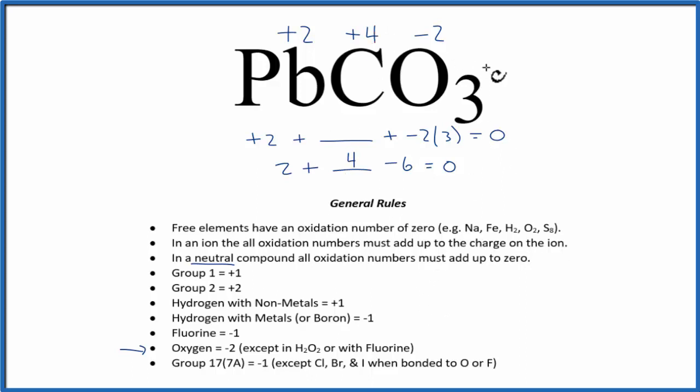To recap, we used the information we knew about the carbonate ion to find the oxidation number on the lead, and then we used these rules where oxygen is -2 to figure out the oxidation number on the carbon in PbCO3. This is Dr. B with the oxidation numbers for lead carbonate. Thanks for watching.